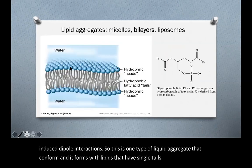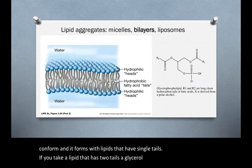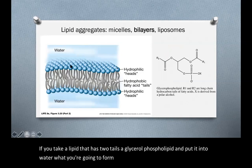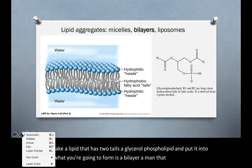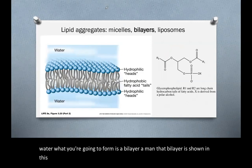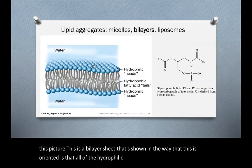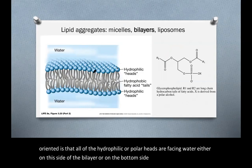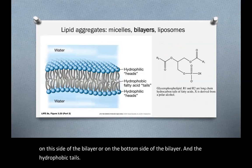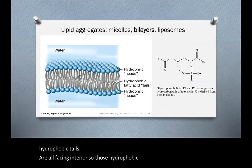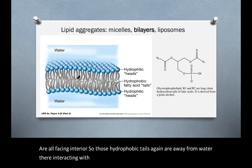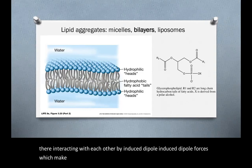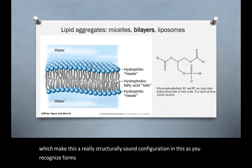If you take a lipid that has two tails, like a glycerophospholipid, and put it into water, what you're going to form is a bilayer. All of the hydrophilic or polar heads are facing water, either on the top side or the bottom side of the bilayer, and the hydrophobic tails are all facing interior. Those hydrophobic tails are away from water, interacting with each other by induced dipole-induced dipole forces, which makes this a really structurally sound configuration. As you'll recognize, this forms the structural basis for biological membranes.